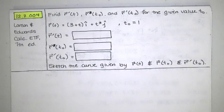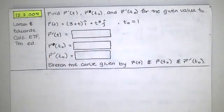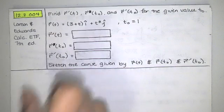In this video, we solve problem 12.2.004 from the Larson and Edwards Calculus Early Transcendental Functions text, 7th edition. We're asked to find r prime of t, r of t naught, and r prime of t naught for the given value of t naught, and we have r of t as given by this function.